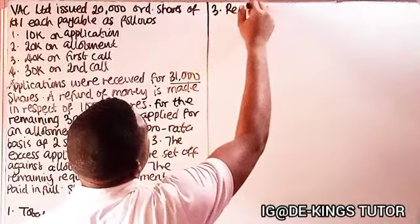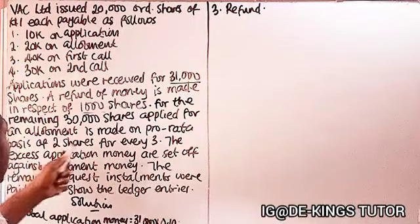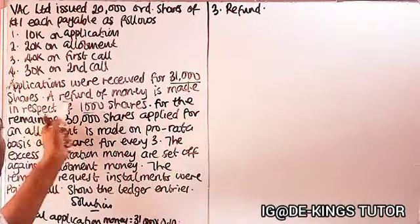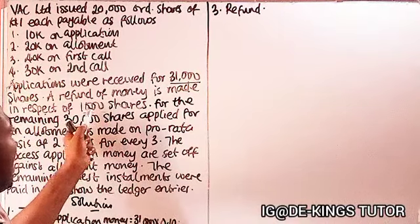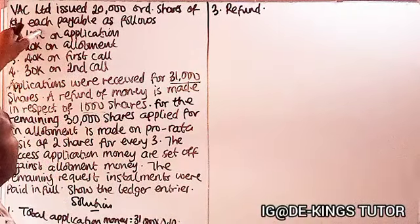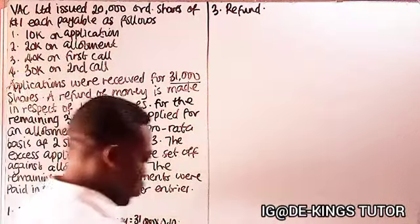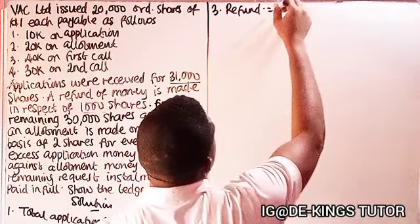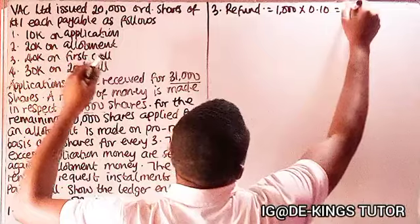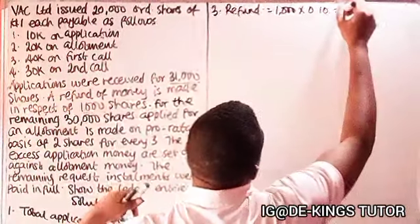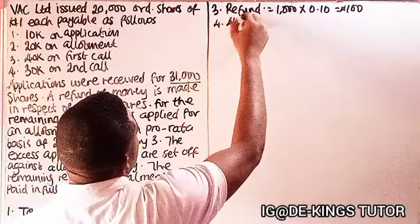Third, the refund: they made a refund in respect of 1,000 shares, and this refund is based on the application money paid. So it is 1,000 times 0.10, which gives us 100. So one hundred naira is the refund amount.